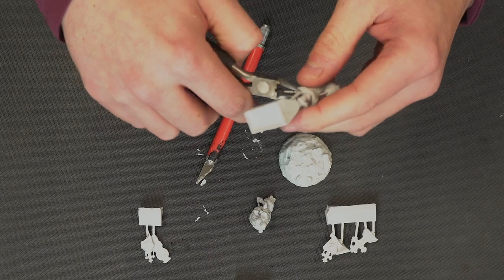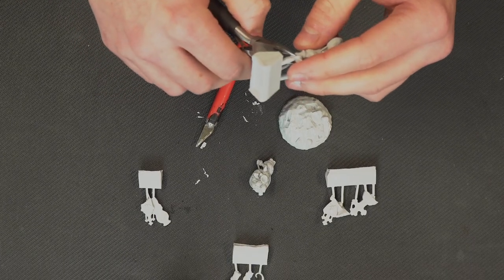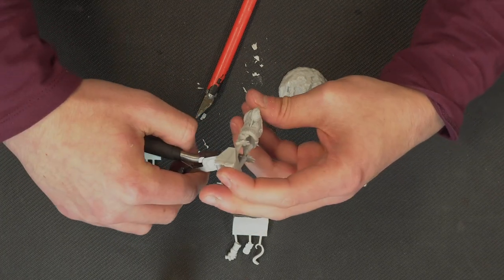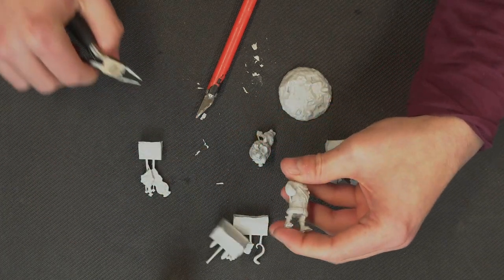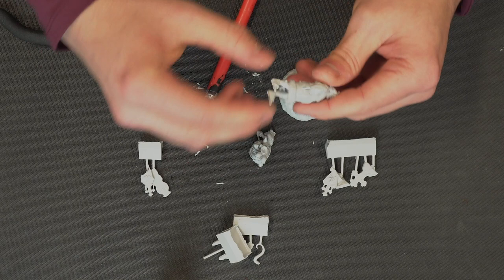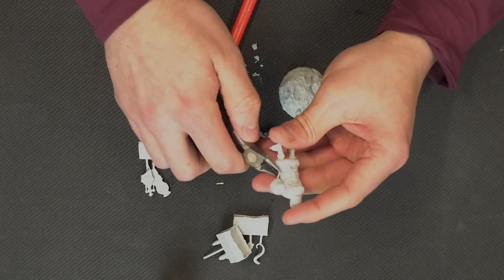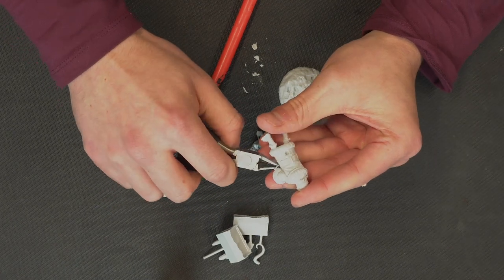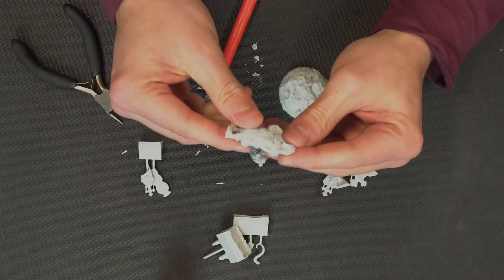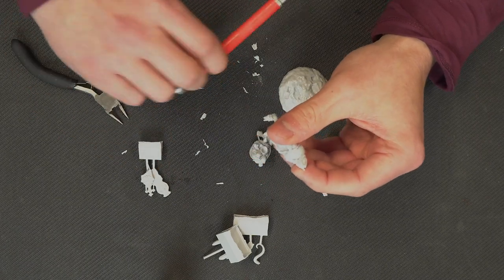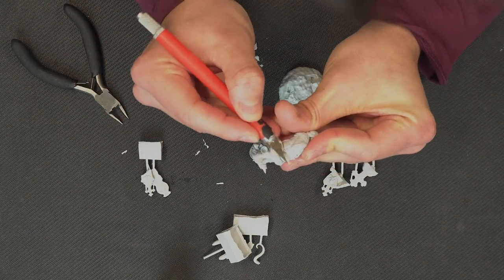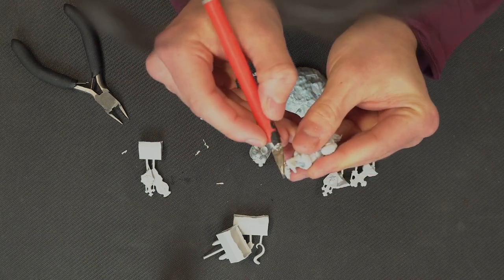So let's start with Hellboy himself. Just hold on to the bottom of the flash, and that will stop it from shooting across the room and also stop it putting so much stress on the actual model itself. Then we've got a little bit under the arm that we need to take off, and he's ready. We just need to go in and clean up a couple of little bits.